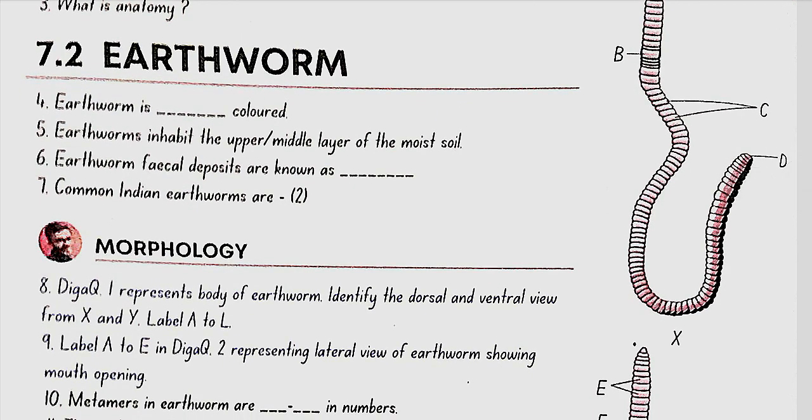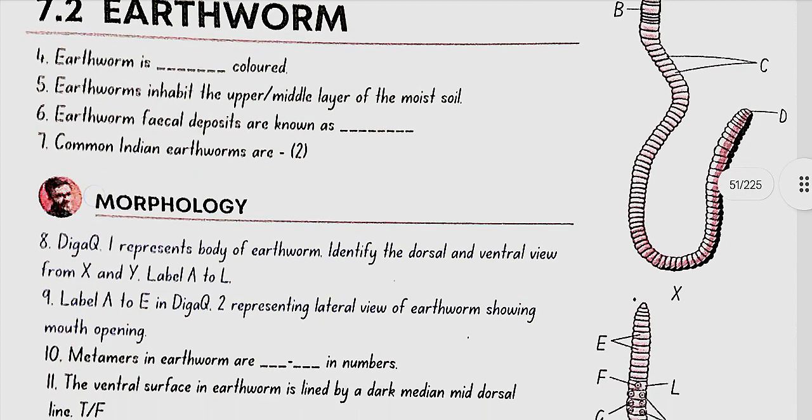Earthworm. Earthworm is reddish brown colored. Earthworms inhabit the upper layer of moist soil. Earthworm fecal deposits are known as worm castings. Common Indian earthworms are Pheretima and Lumbricus.